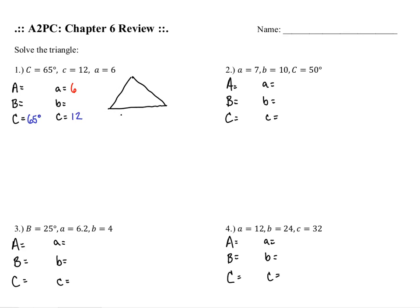It is necessary when using law of sines to sketch this up and see if an ambiguous case applies. I like to put the given angle in the bottom left for consistency. My given angle is acute, and across from that angle the matched-up side C equals 12. I notice that the opposite side is greater than the adjacent side, so it's not the ambiguous case — there's only going to be one solution and we can get to work.